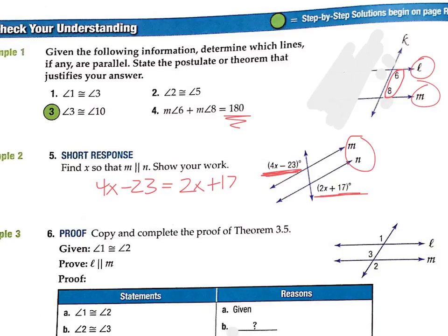So we're setting those equal, and then we're just solving. Subtract 2X from both sides. So I get 2X minus 23 equals 17. Add 23. Now I'm writing over some words, but hopefully you can see that. So that gives me 2X is 40, divide by 2, and we get X is 20.